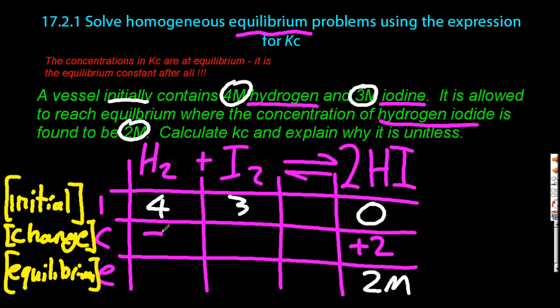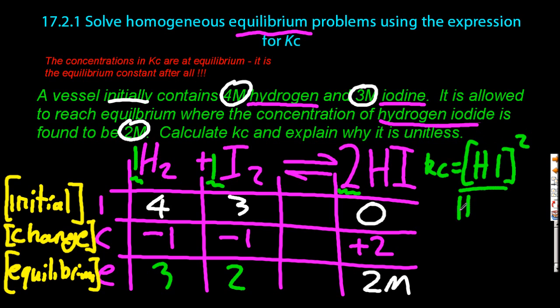Consequently, the others have to go down by 1, because the ratio of the coefficients at the top is 1 to 1 to 2, and that has to be mirrored in the middle line. So 4 changed by minus 1 gives me 3. 3 changed by minus 1 gives me 2. I have my 3 values at the bottom.